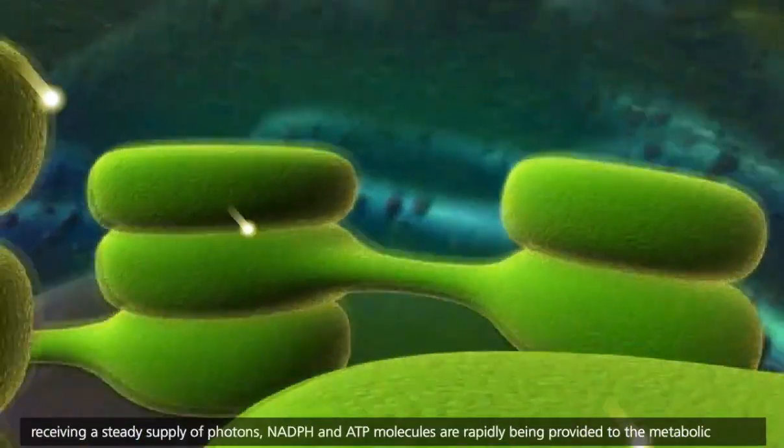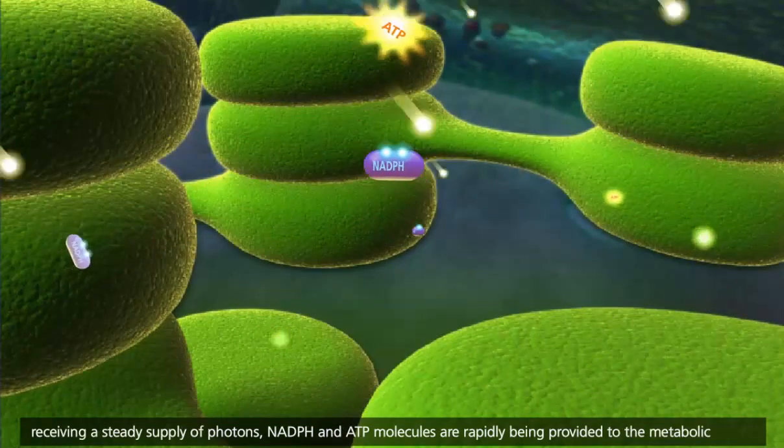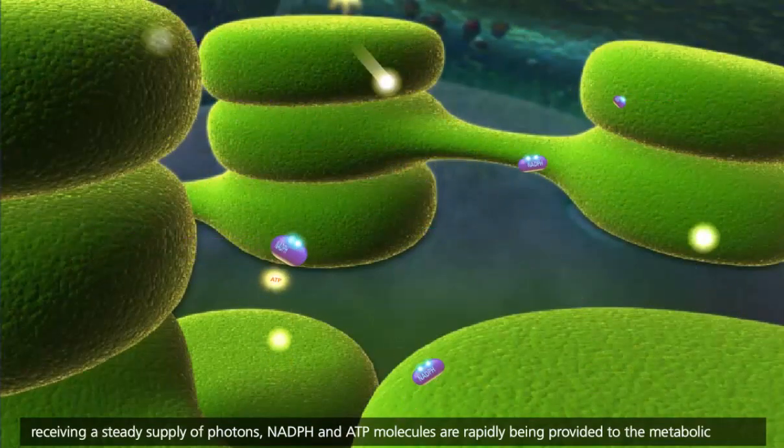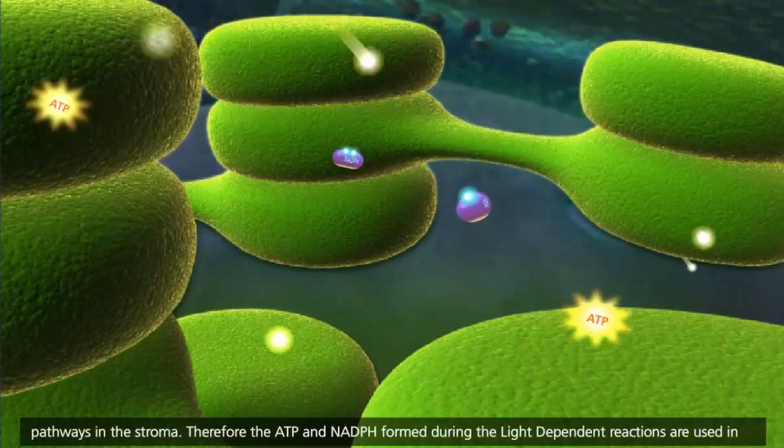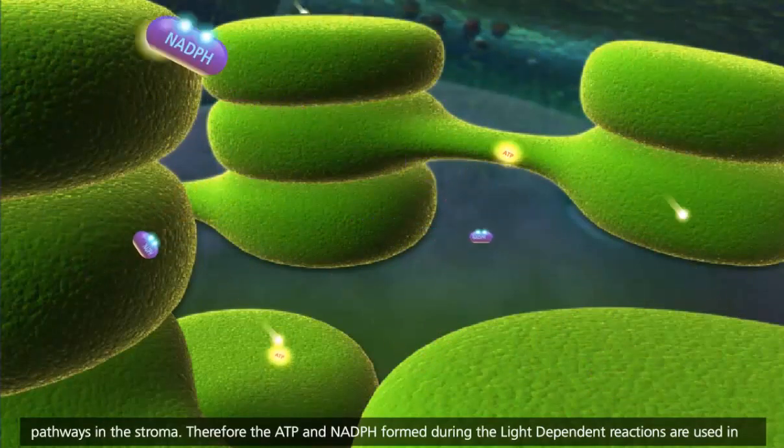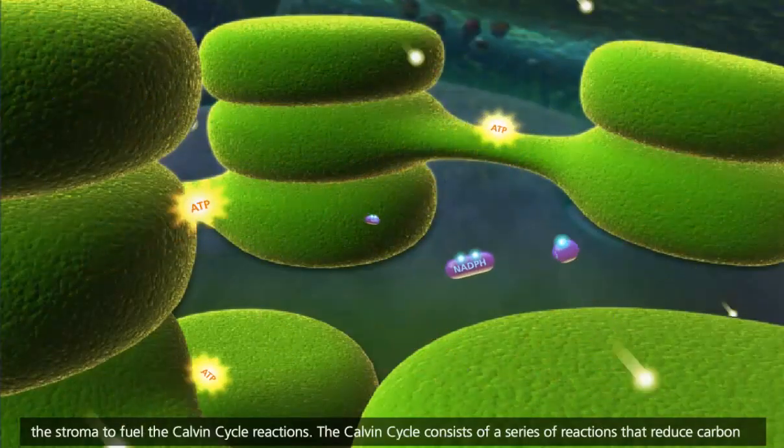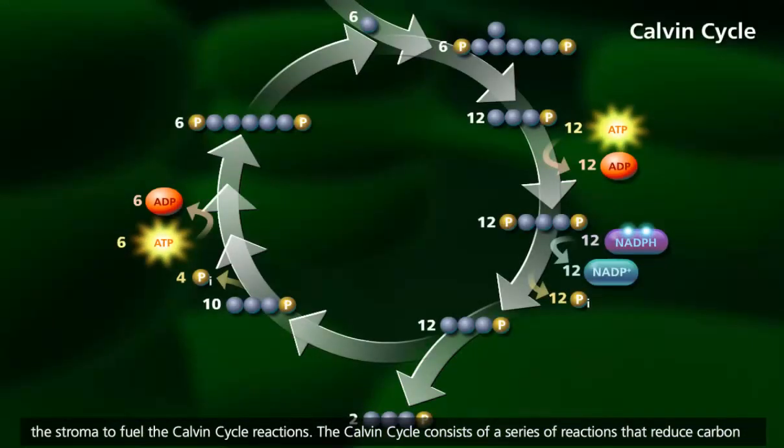When the chloroplast is receiving a steady supply of photons, NADPH and ATP molecules are rapidly being provided to the metabolic pathways in the stroma. Therefore, the ATP and NADPH formed during the light-dependent reactions are used in the stroma to fuel the Calvin cycle reactions.